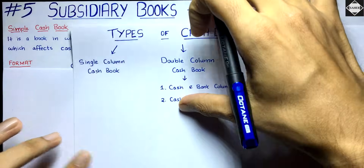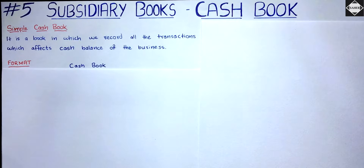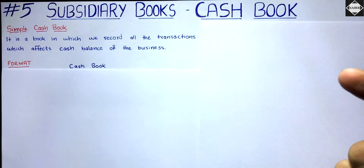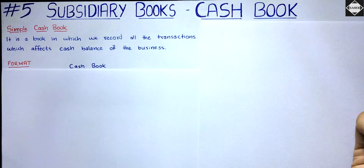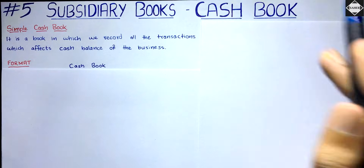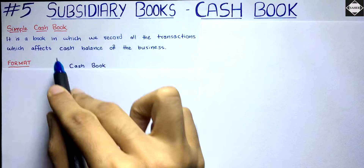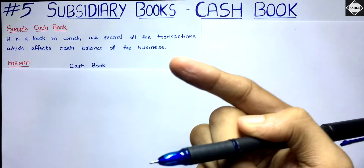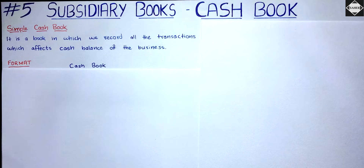Let's understand the single column cashbook — the format, the concept, and everything. The first question that should pop in your mind is: what will be recorded in the cashbook? The name says it itself — cashbook. So all cash transactions will be recorded in the cashbook. Any transaction which touches the cash balance of the business — which increases or decreases the cash — those transactions will be recorded.